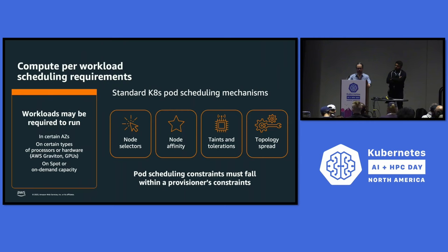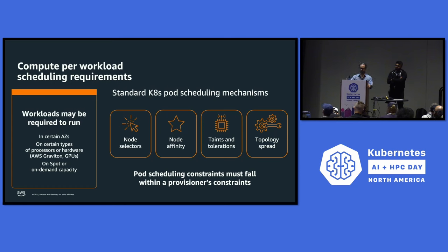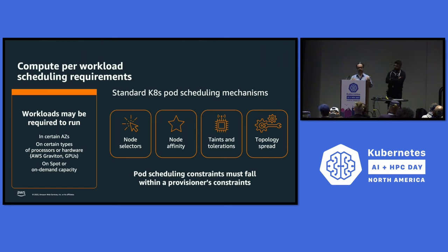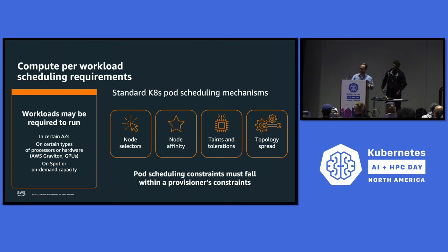Karpenter uses standard Kubernetes pod mechanisms — node selectors, node affinity, taints and tolerations, topology spread. It respects all those rules, so you can have workloads targeting certain availability zones, certain processor types like GPUs or Graviton, and certain architectures. You're building a Kubernetes object that respects Kubernetes rules, and it uses a CRD so it can be part of your GitOps process.